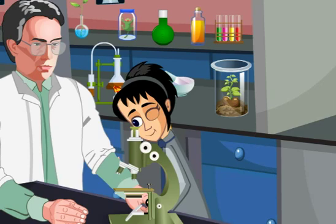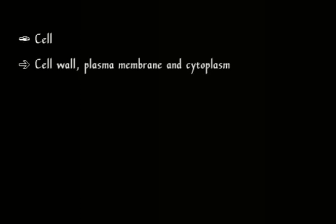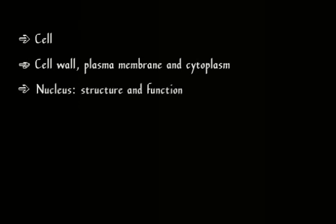a cork or a section of stem. Let's try to know more about the cells that are the basic component of life through this chapter. Here, we will be studying about cell, cell organelles like cell wall, plasma membrane and cytoplasm, nucleus,